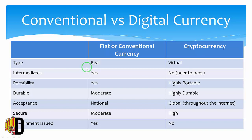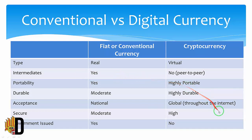Conventional currencies are accepted nationally, but cryptocurrencies can be used globally through the internet. Conventional currency is issued by the government, whereas cryptocurrency is not issued by the government.